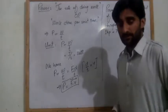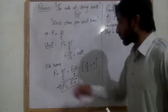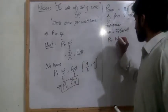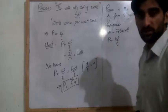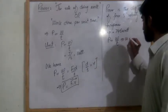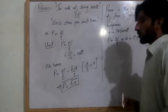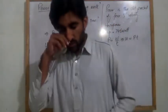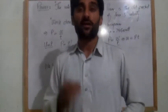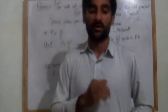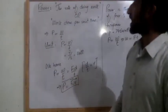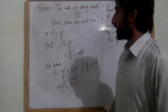Agar isi formula ko lein toh P is equal to W divided by T. Agar isse work done nikalna ho toh work done will be equal to P times T. Isi formula ko madde nazar rakhte hue ek aur unit hai, that is called kilowatt hour.